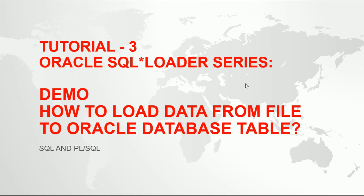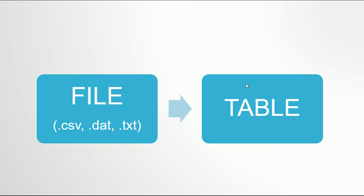We want to load data from files into tables — regular Oracle database tables. The files are in a specific format that SQL Loader can process. There are two types: positional files and files delimited by a delimiter, such as CSV (comma-separated values), .dat files, or .txt files. The extension doesn't really matter — what matters is the format in which the data is stored.